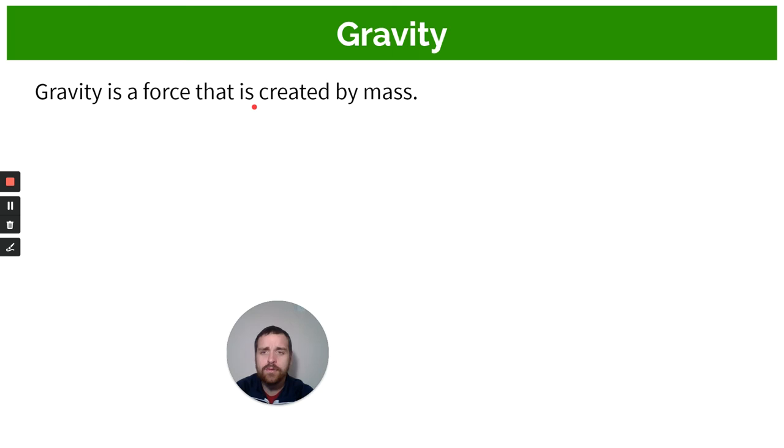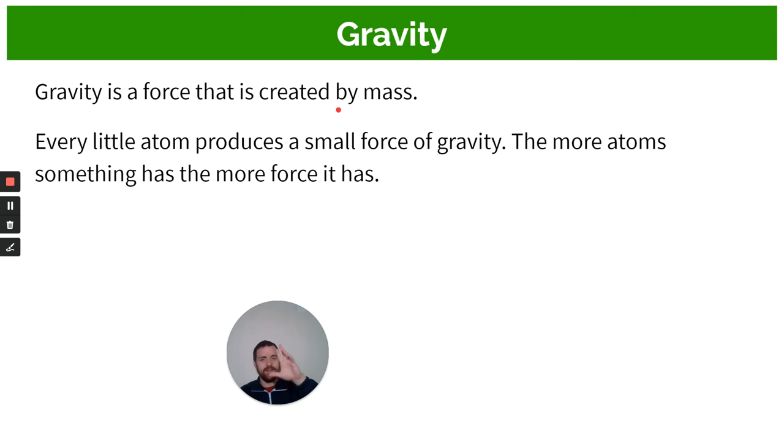Okay let's go into a little more detail. Every little atom now every atom produces a small amount of gravity. That's because if we go back to mass every atom has mass okay. So every atom creates a very minuscule amount of gravity. So every atom is actually pulling other things closer to it because it has gravity but it's very small. If we have more atoms uh more atoms something has the more force it has. So if we can get more atoms together all those little bits of gravity sort of build up we have this huge pull of gravity okay.